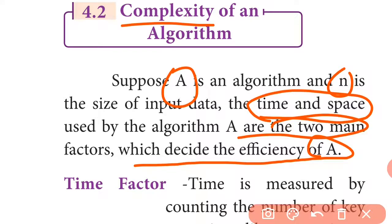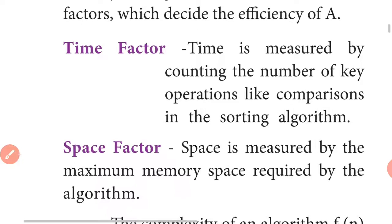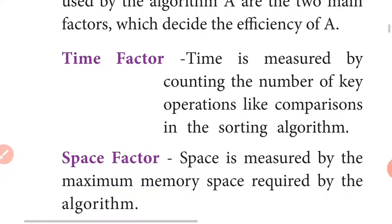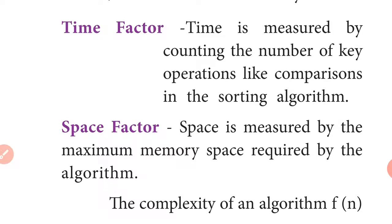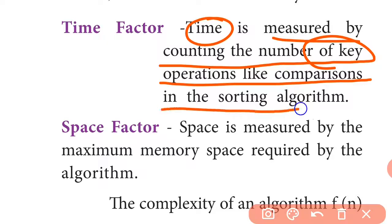The first factor is the time factor. Time is measured by counting the number of key operations — for example, counting the number of key operations such as comparisons in a sorting algorithm. This tells us how much time the algorithm takes to process.